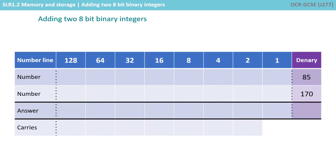So let's work through some examples. Here we have a binary number line, and we always suggest you write this out in the exam. You start with a 1 on the far right and then double each column as you go to the left: 2, 4, 8, etc. We're going to add together the denary numbers 85 and 170.